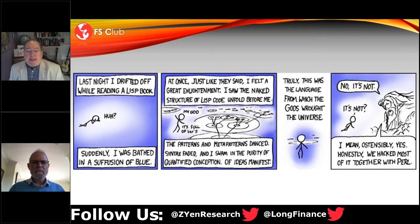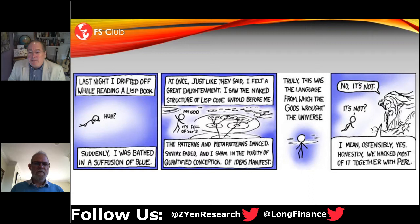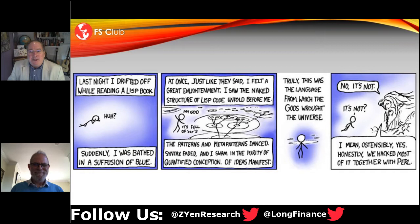I myself began back in the 70s playing around with LISP. Once people encounter functional programming, which is a class of languages that Philip will explore with us, you tend to find that they're quite entrancing. There's an XKCD comic: last night I drifted off while reading a LISP book, suddenly bathed in a suffusion of blue, feeling great enlightenment. But honestly, we hacked most of it together with Perl. And as we look at the state of financial systems, we can see the mess of tangled spaghetti code. Does functional programming offer a new opportunity to clean that out and move onto a better platform, or are we deluding ourselves?